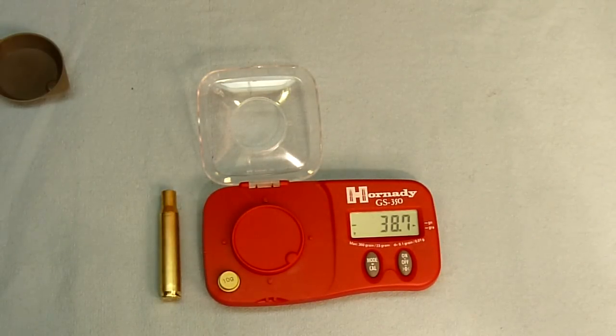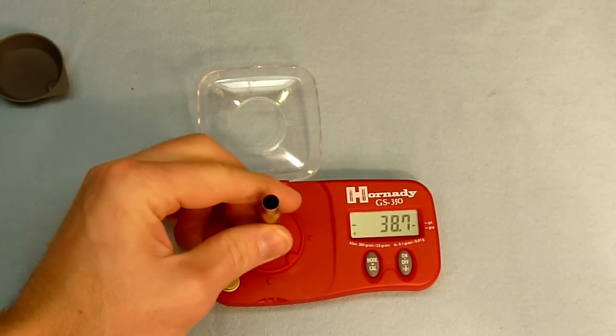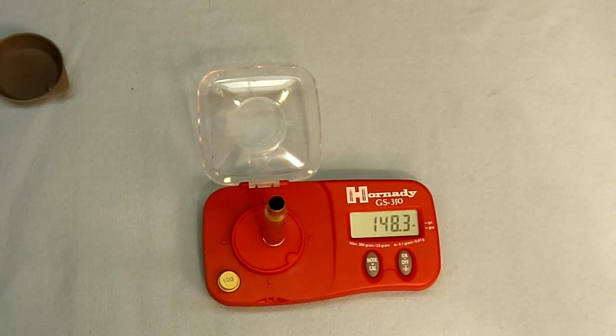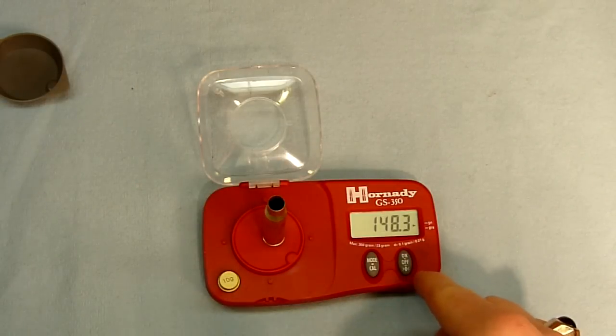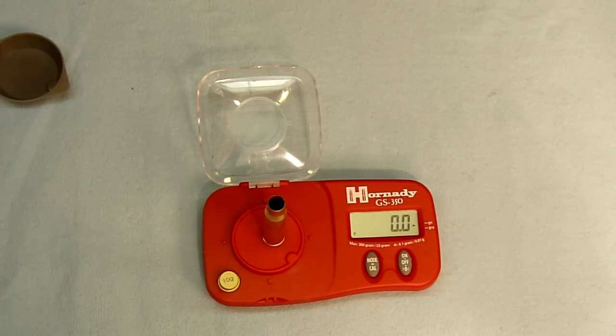So here I'm going to demonstrate working up a powder charge in a 30-06 case. The first thing we're going to do is put the case on the scale, and then we will set the zero point. Just that easy, we've zeroed this out.